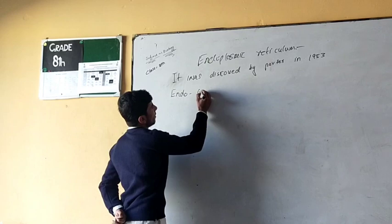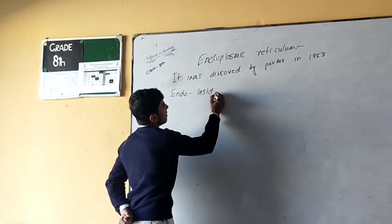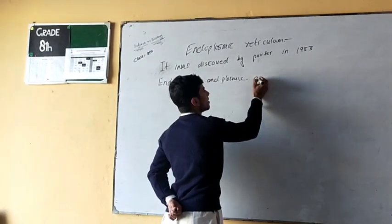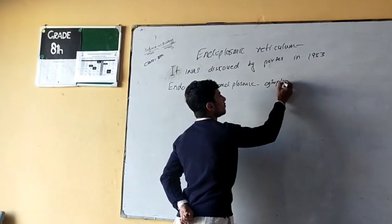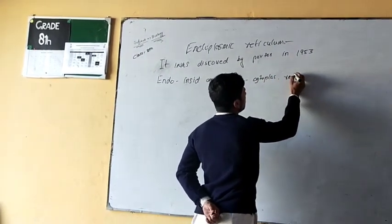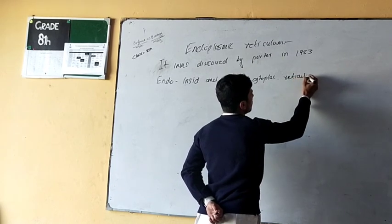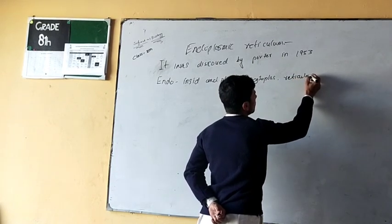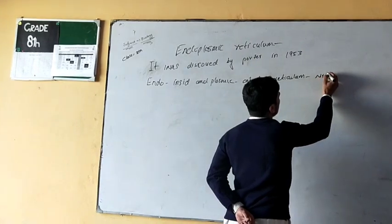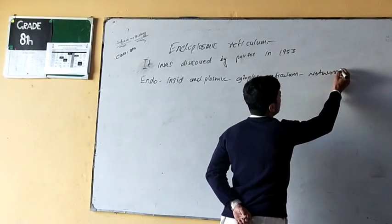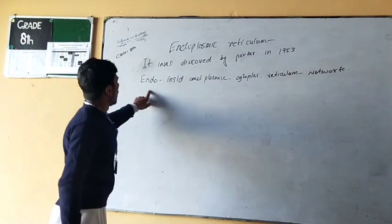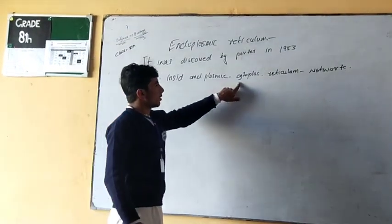Endo means inside, and plasmic refers to the cytoplasm. Reticulum means network. So endoplasmic reticulum means a network inside the cytoplasm.